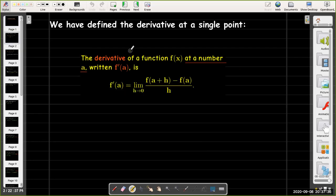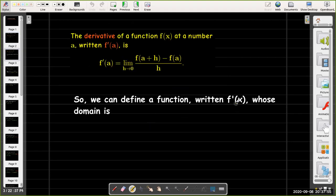Now, we define the derivative only at a single point, but there's no reason why we can't define the derivative for every value of a or every value of x where that limit is defined. So we can think of f prime of x as a function of x, and the domain is going to be all the values of x where that limit is defined, meaning that it has to exist and be finite.